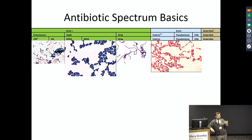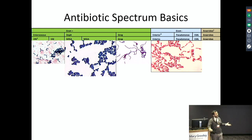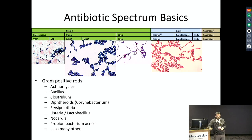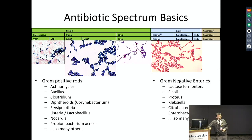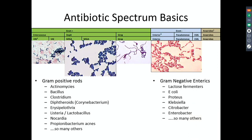Staph bacteria can be either sensitive to methicillin or resistant to methicillin, and enterococcus can be either sensitive to vancomycin or resistant to vancomycin. There are lots of gram-positives in the world, and vancomycin is usually the go-to for those others. Here are some of the gram-negative enteric bugs — like E. coli, Proteus, and Klebsiella — but there are lots of these bacteria.